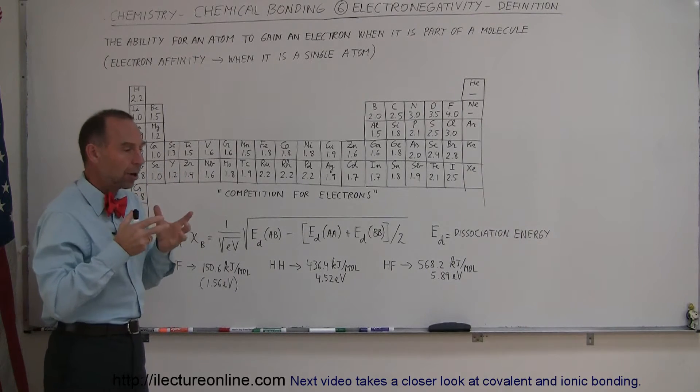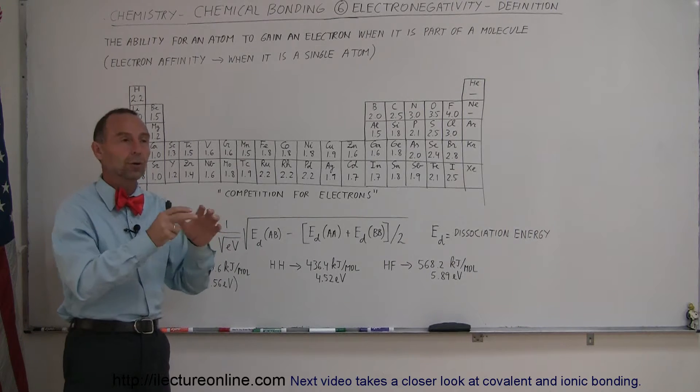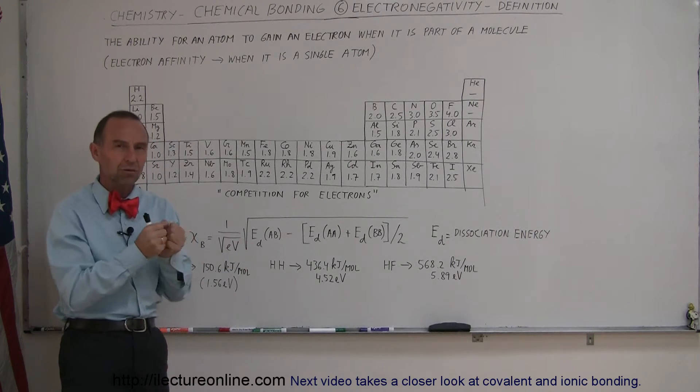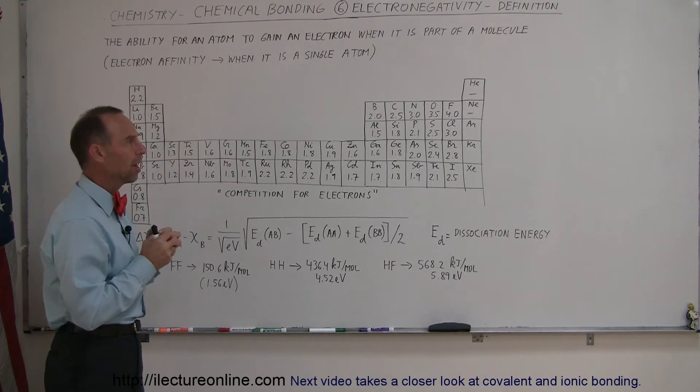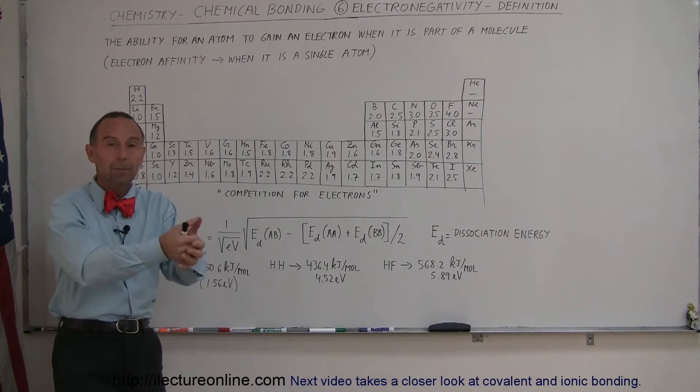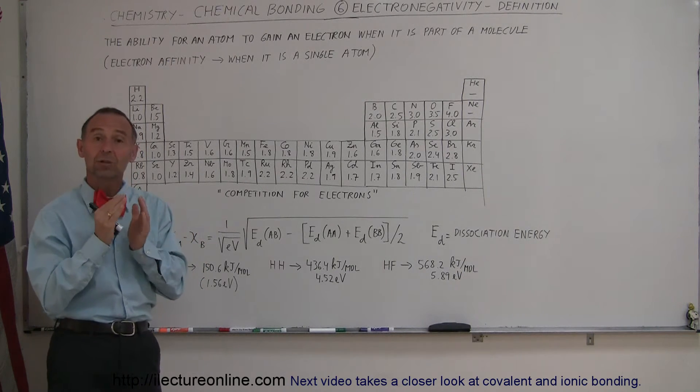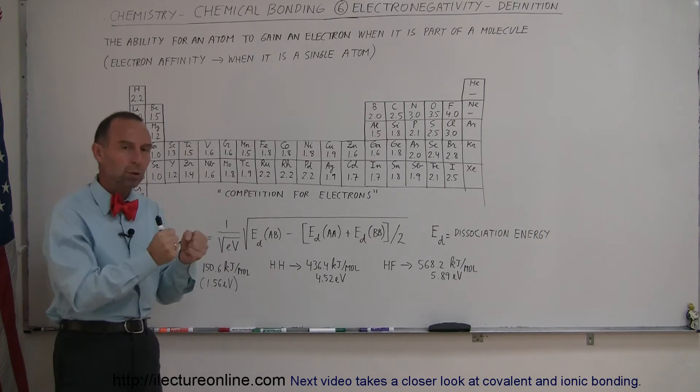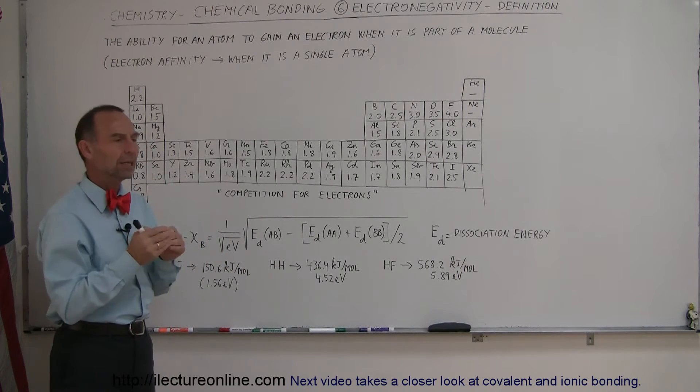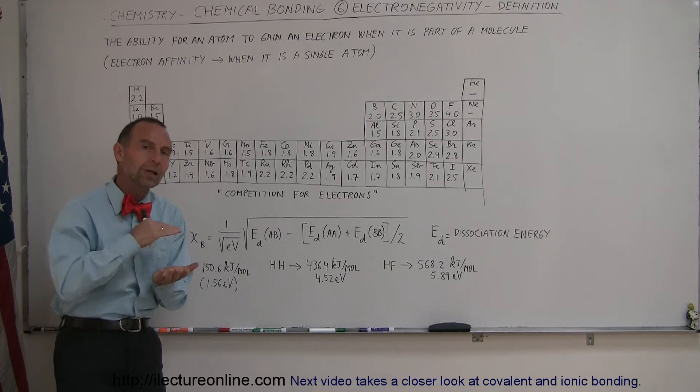For example, how hard does a hydrogen atom pull on an electron when it's bonding with other atoms? How hard does a fluorine atom pull on an electron when it's bonding with other atoms? That is the concept of electronegativity. The greater the pull, the higher the electronegativity. The weaker the pull, the lower the electronegativity.